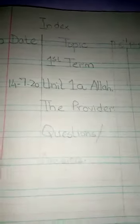For index you have to leave at least 6 pages. After 6 pages we are going to write first term here. Write it with the color pencils or use crayons. Make it colorful. Here you are going to make your title page. Allah the provider. Make it nicely.